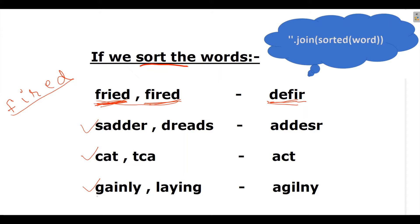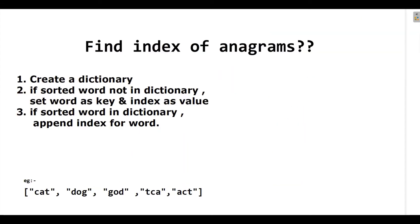Now, let us twist the question. I want to take out the index of anagrams. For example, if I have been given in array form, cat, dog, god, TCA and act.